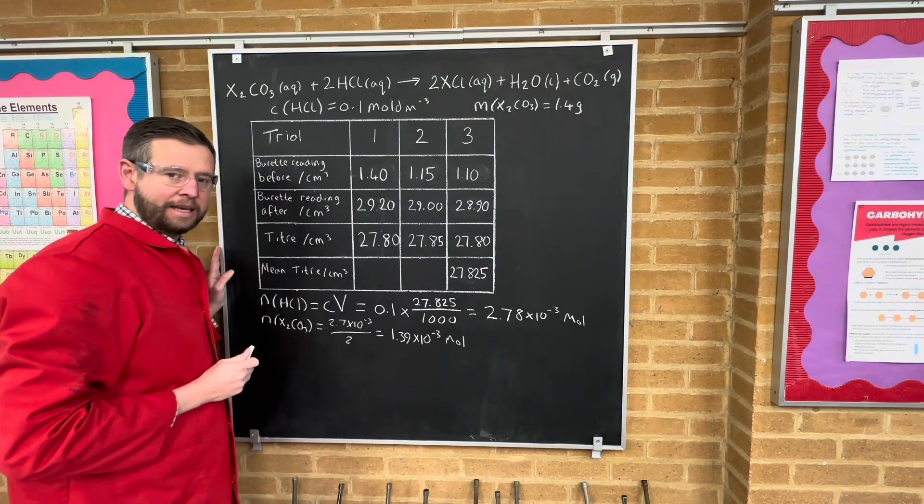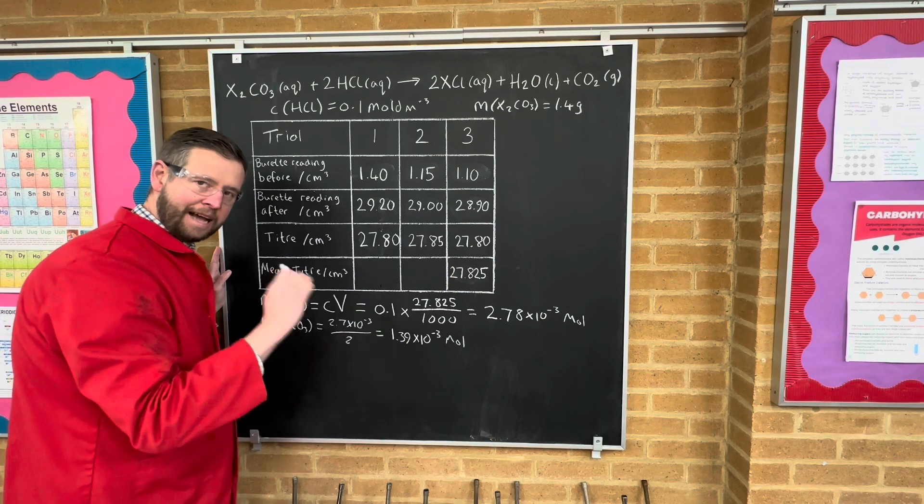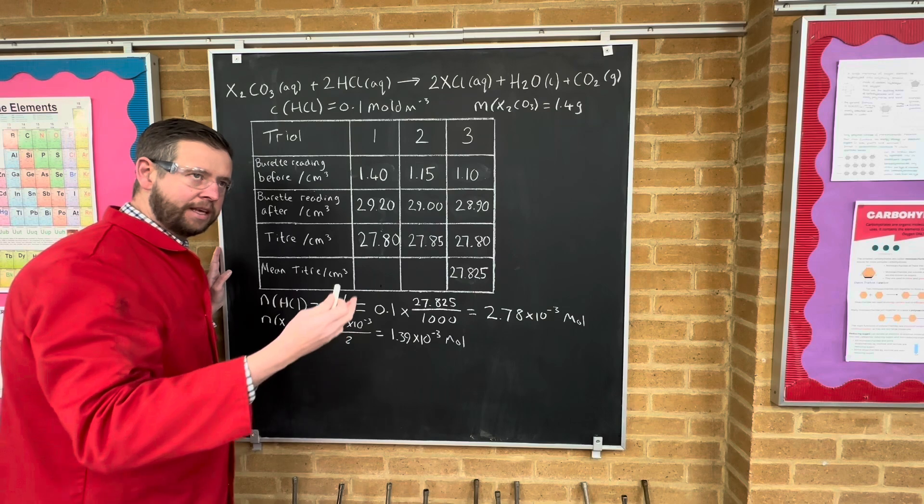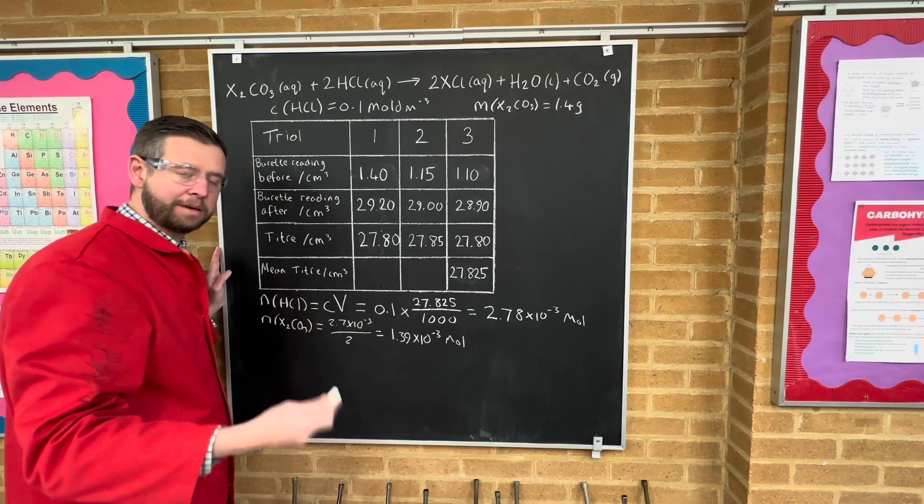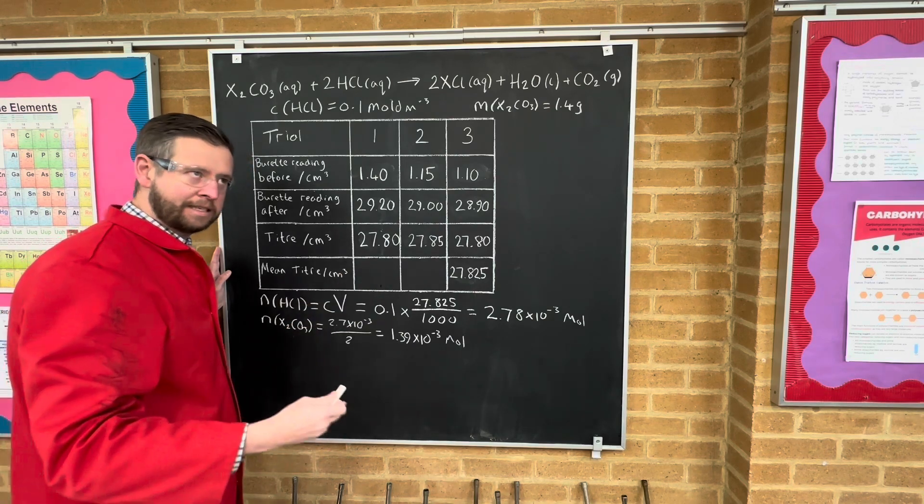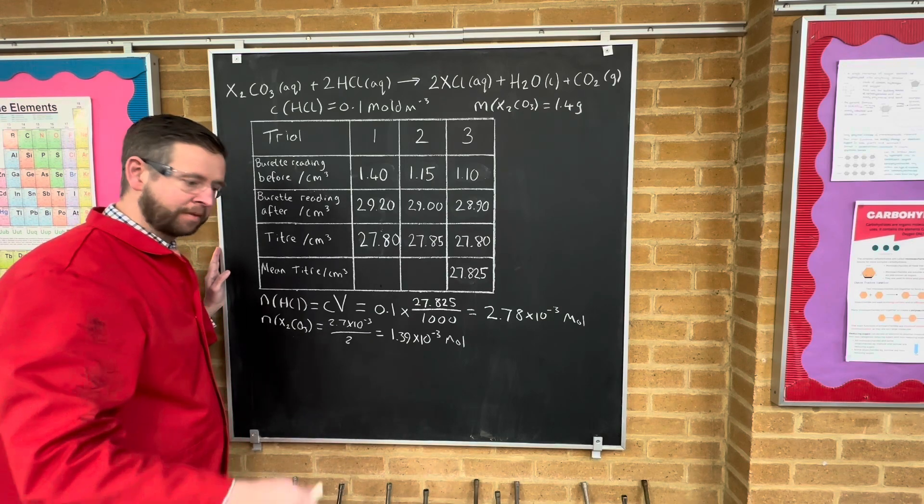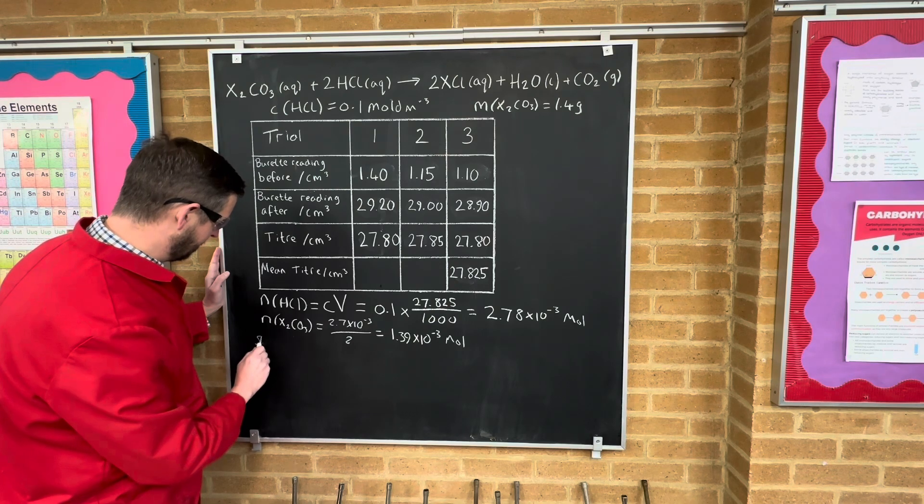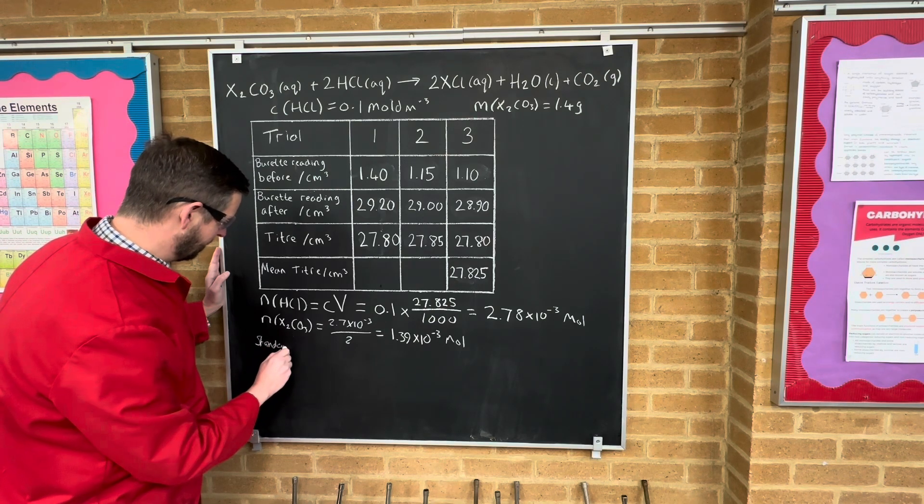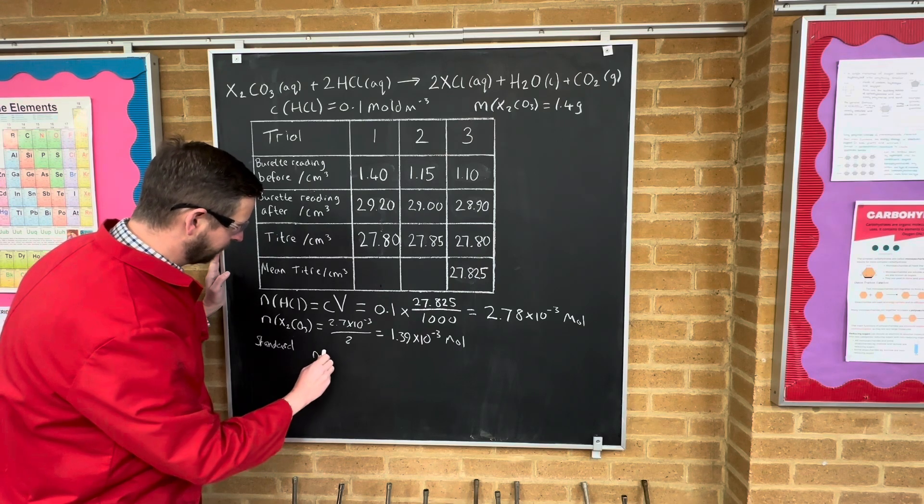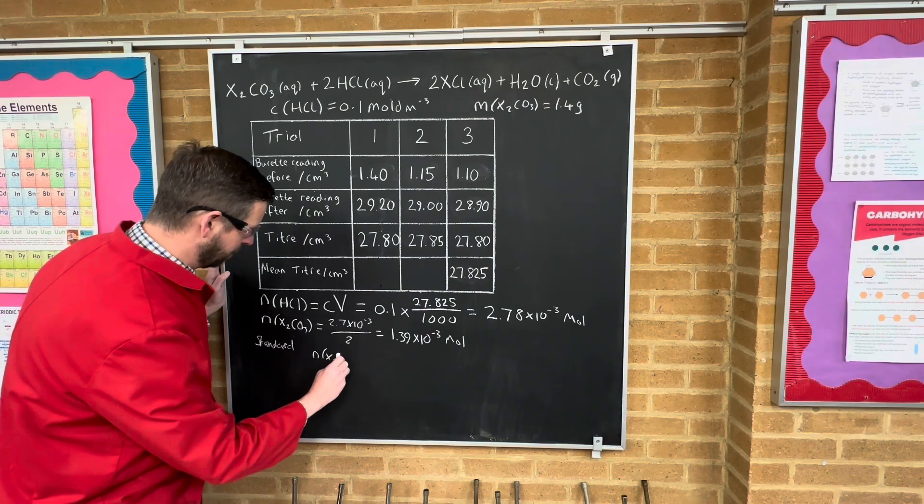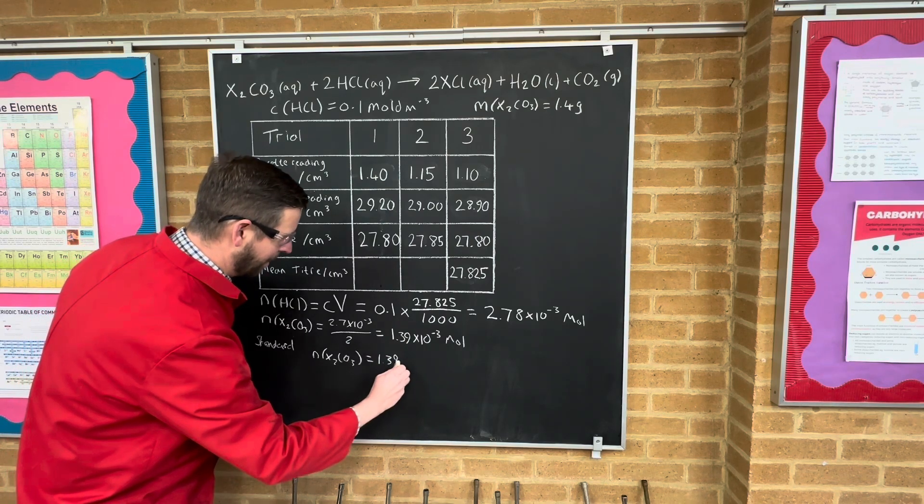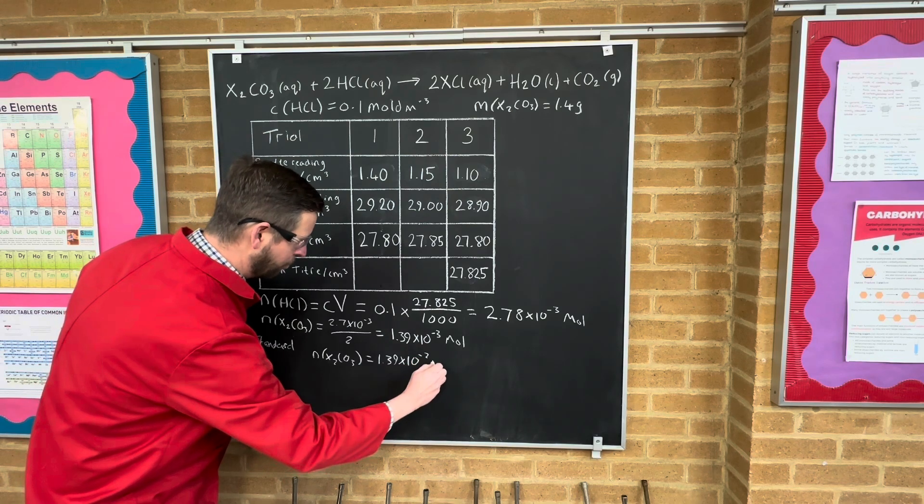And the next step is to consider that there was 1.39 in the analyte, in the 25 milliliters. So how much was there in the standard solution, which was 250 milliliters? Well there'd be 10 times more because there was 10 times more volume. So the number of moles in the standard, the number of moles of the unknown carbonate would be equal to 10 times this: 1.39 times 10 to the minus 2 moles.